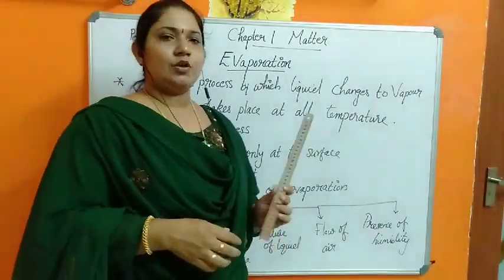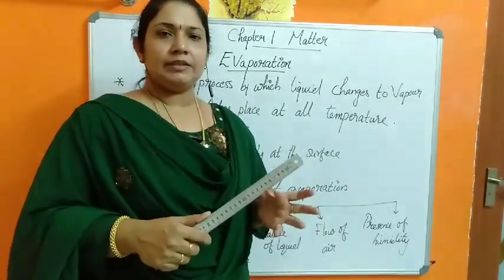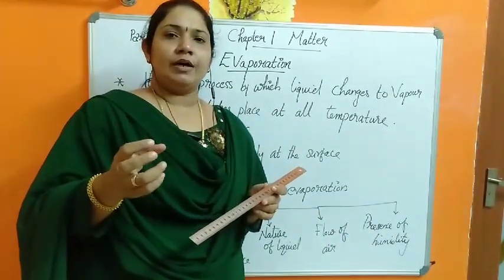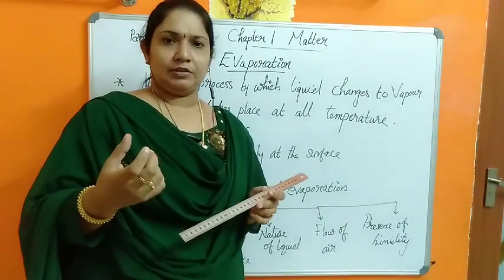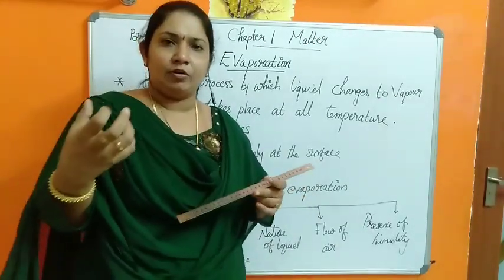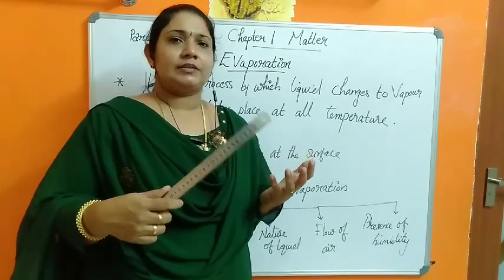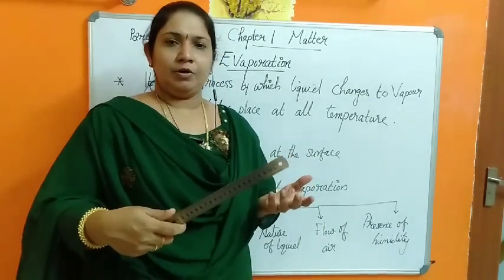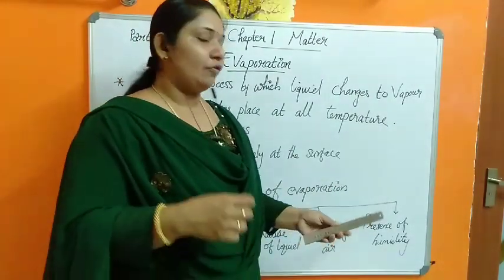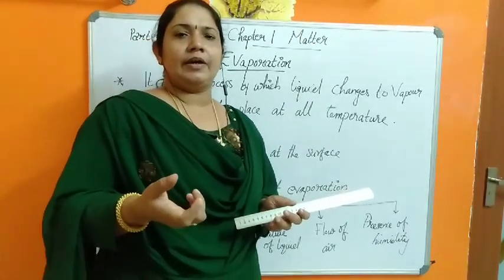The fifth factor is the presence of humidity. In summer it is dry air, but in monsoon season the atmosphere is full of water molecules, meaning humidity is more. In monsoon, the rate of evaporation is less because of high humidity. In summer it is dry, so clothes dry up faster.